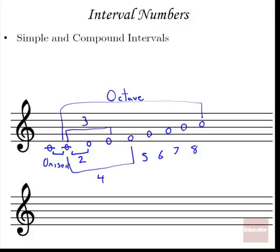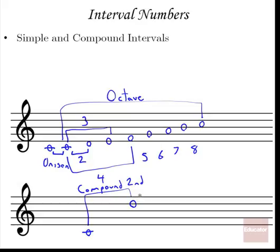These are the numbers available when naming intervals. Notes that are farther apart than an octave are called compound intervals. For instance, C going to the D above the octave could be called a ninth, or a compound second. It's not uncommon to see ninths and tenths called as such, but beyond that you'll see compound fourth, compound fifth, and so on.